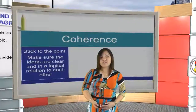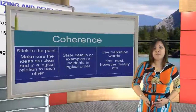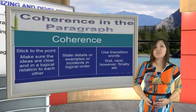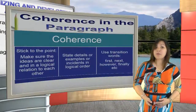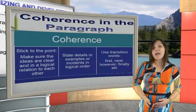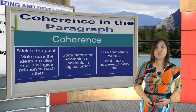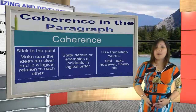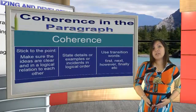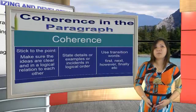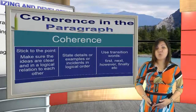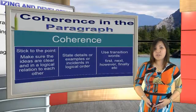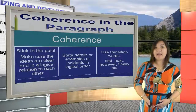For coherence in a paragraph, number one, you should stick to the point. Make sure the ideas are clear and in a logical relation to each other. State the details, examples, or incidents in logical order. You can also use transition words such as first, next, however, finally, and many more.